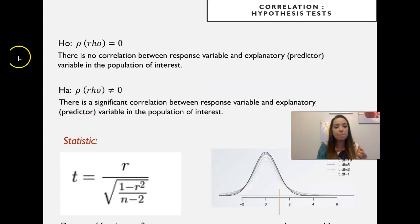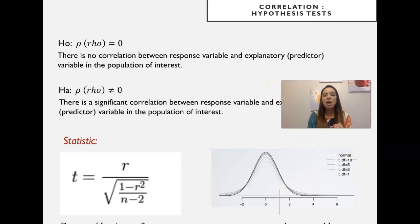So what's the null hypothesis in this case? Rho equals zero. There is no correlation between response variable and explanatory or predictor variable in the population of interest. The alternative is that rho is different from zero, that there is a significant correlation between response variable and explanatory variable in the population of interest. In the context of correlation and regression, we talk a lot about predictor variables, and that's the same as explanatory variable.